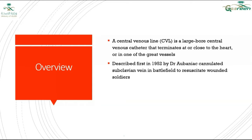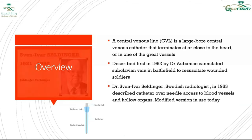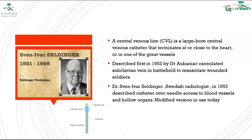It was first described by Professor Obniak, who cannulated the jugular vein during battlefields. After that, in 1953, the Seldinger technique was described. Seldinger was a Swedish radiologist — the first one to describe catheter-over-wire access to blood vessels, in 1953.